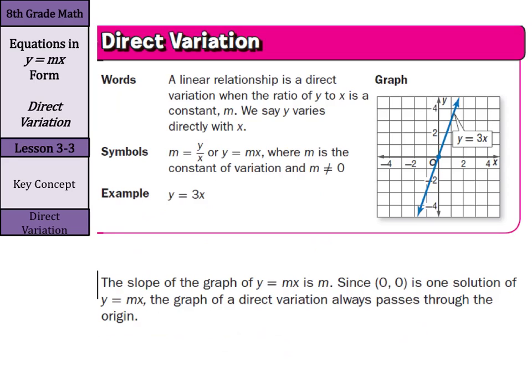What is direct variation? It is a linear relationship when the ratio of y to x is a constant m. We say y varies directly with x. Symbols we're going to use are m equals y over x, or y equals mx, where m is the constant of variation and m does not equal 0. An example: y equals 3x, and you can see that on the graph.